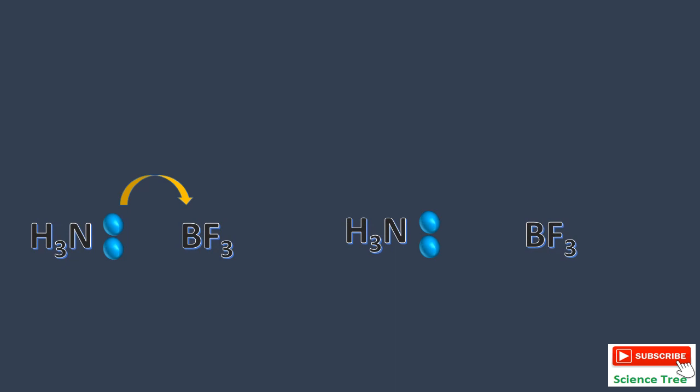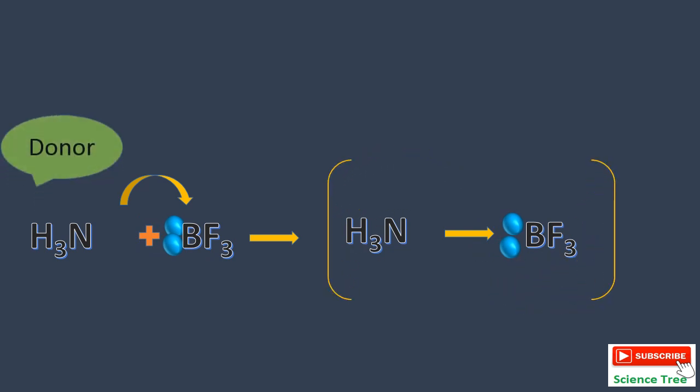Who is going to be a donor and a receptor in case of ammonia and boron trifluoride? Ammonia is donating a pair of electrons to boron trifluoride. So here ammonia will act as a donor while boron trifluoride will act as a receptor.